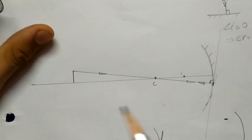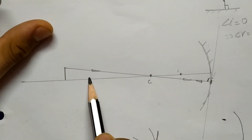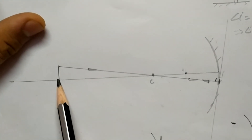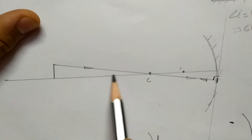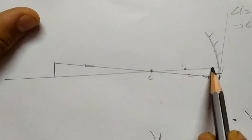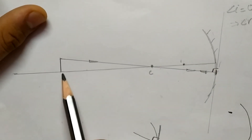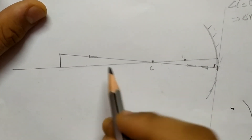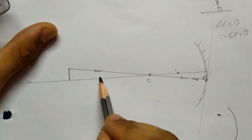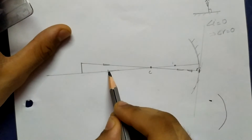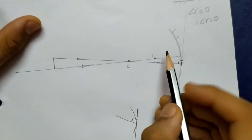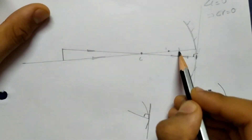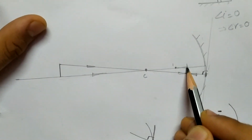So, for a concave mirror, a ray passing through the center of curvature will retrace its path back. Similarly, a ray traveling along the principal axis will hit the pole and retrace its path.